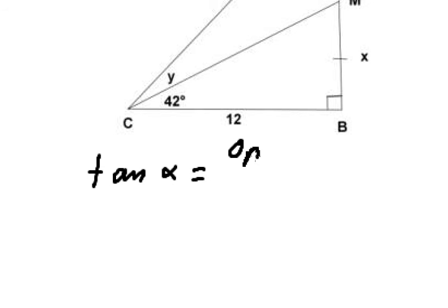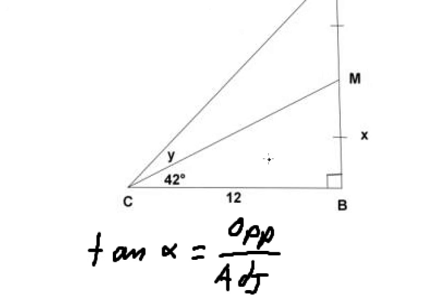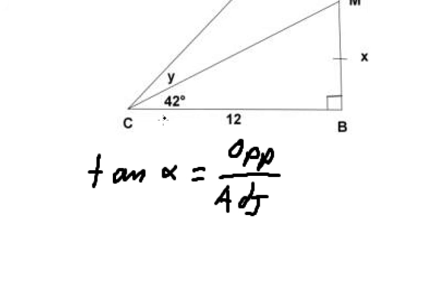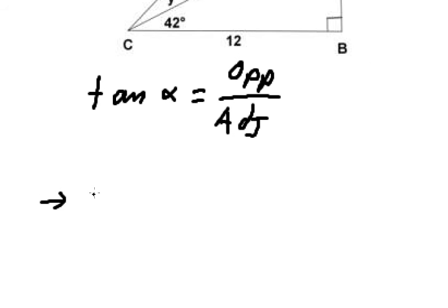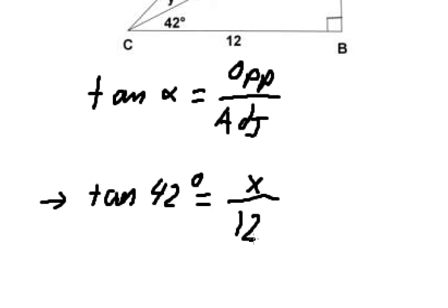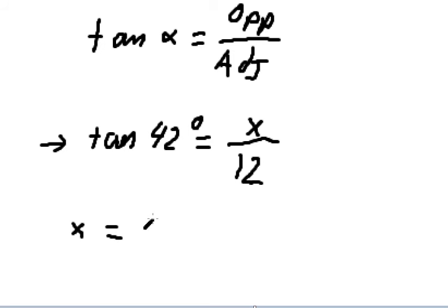Tan alpha equals opposite over adjacent. The opposite side is x, because x is opposite to the angle alpha which is 42 degrees, and the adjacent side is 12. So we rearrange: x equals 12 times tan of 42 degrees.